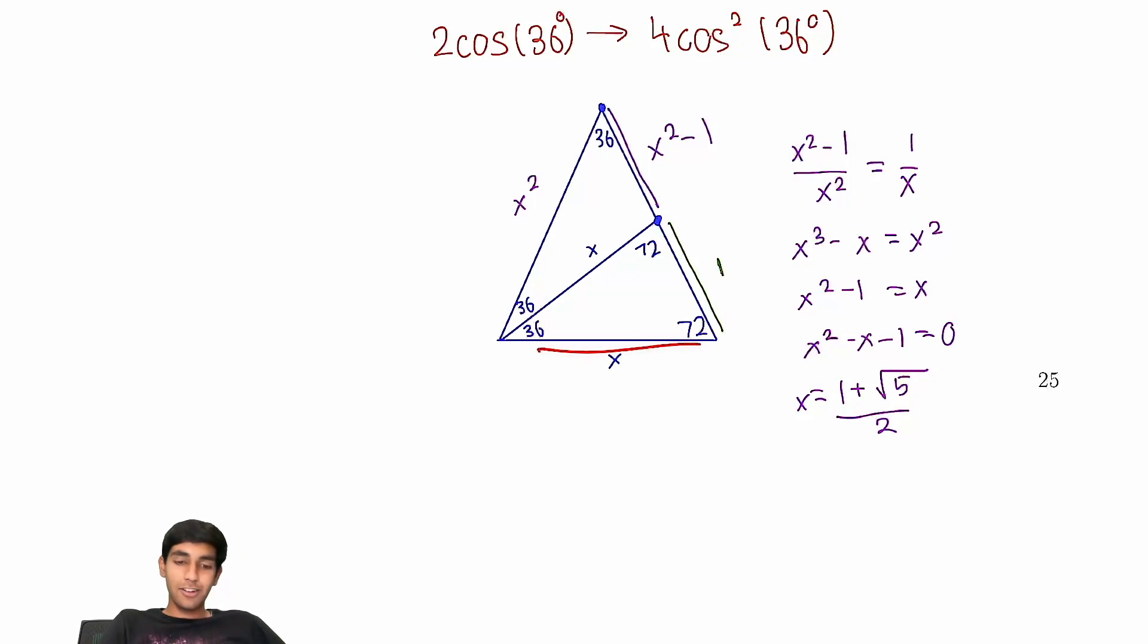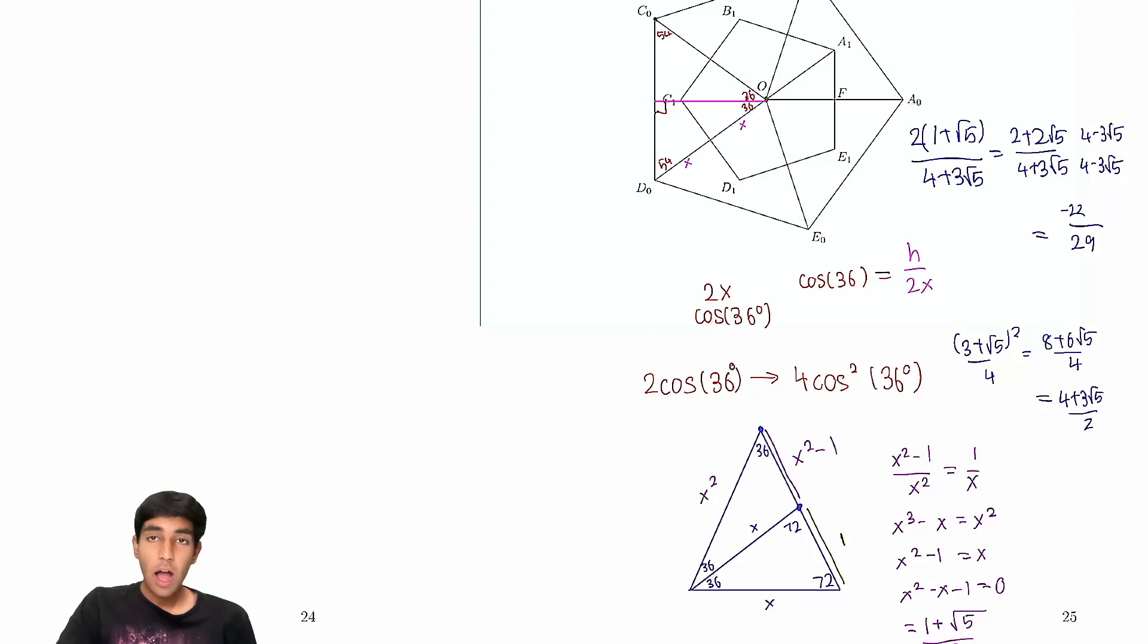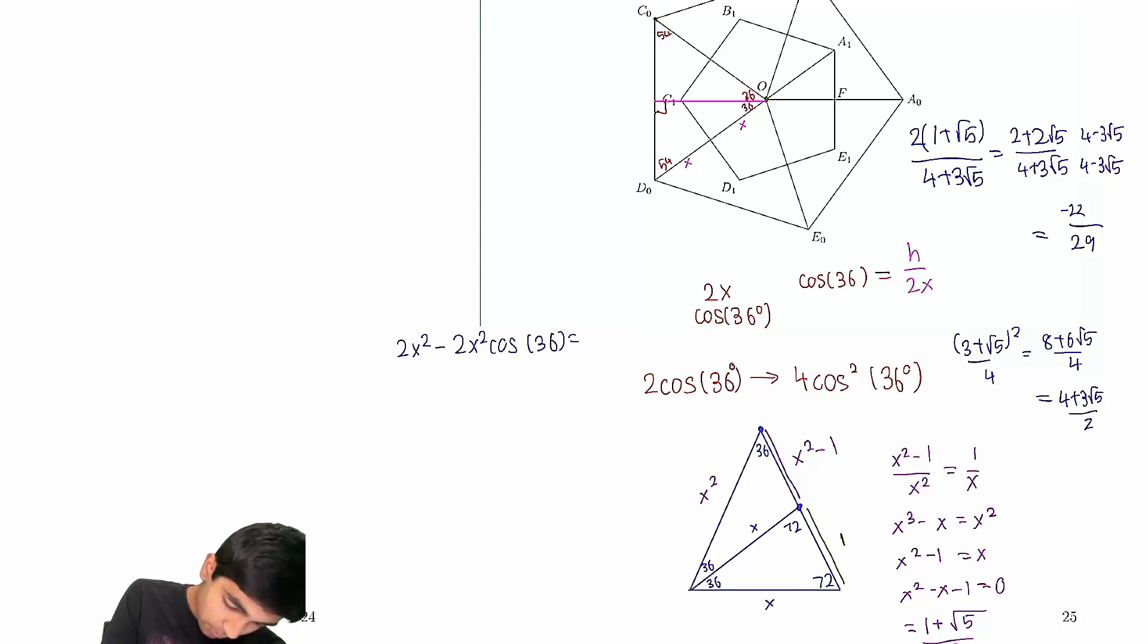Pretty cool. The golden ratio in these 36, 72, 72 triangles. So now, how do we find the value of cosine 36? We can just use law of cosines on this triangle. We can write the equation 2x squared minus 2x squared cosine 36 is 1 squared.